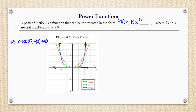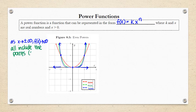The other thing to note with these even power functions is they have three points in common. They all go through the point (−1, 1), the point (0, 0), and the point (1, 1).